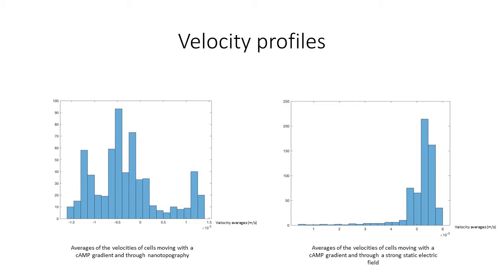So here I have more distribution. On the left, I have the distribution with just the chemical gradient. And on the right, I have it with the electric field. As you can see with the electric field, there's a lot of directed motion towards the right boundary.